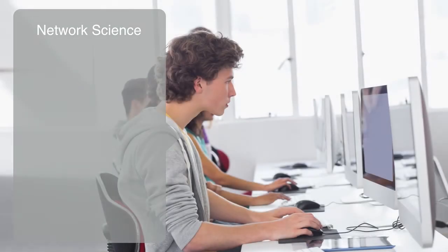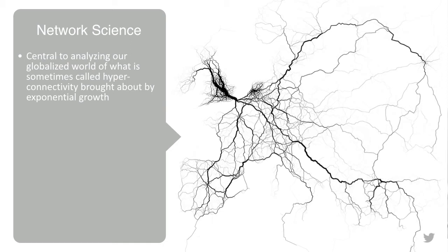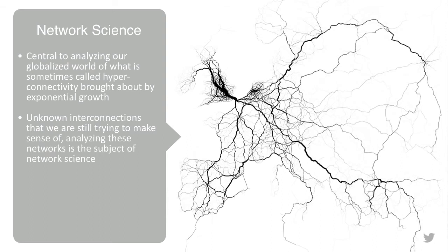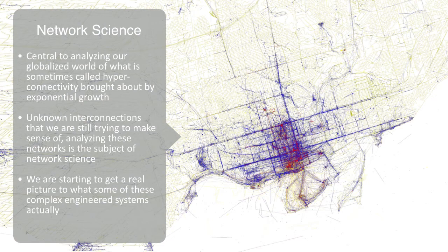Understanding these networks is central to analyzing our globalized world of what is sometimes called hyper-connectivity, brought about by the exponential growth in connectivity across almost all areas. But this huge and rapid proliferation in connectivity has left us in a world of often unknown interconnections and interdependencies that we're still scrambling to make sense of. Modeling and analyzing these networks is the subject of the domain of network science. The study of networks has, in the past few decades, gone from almost complete obscurity to one of the hottest topics in research today. By combining the formal mathematical language of graph theory with network analysis software and new data sources, we're starting to get a real picture of what some of these complex engineered systems actually look like.